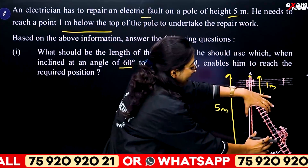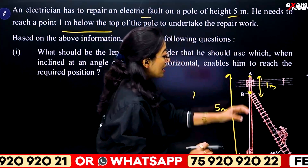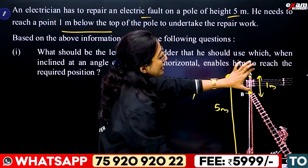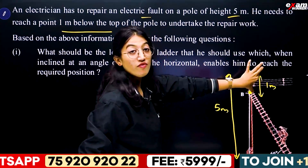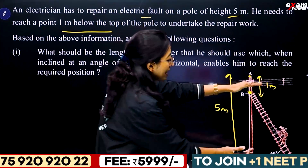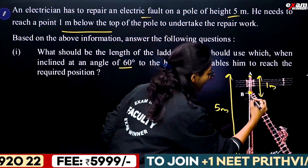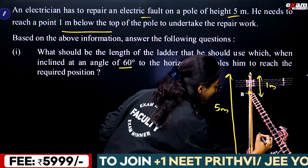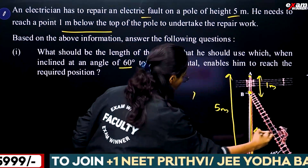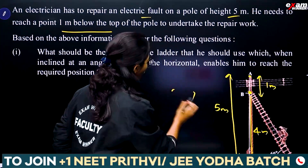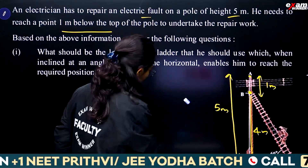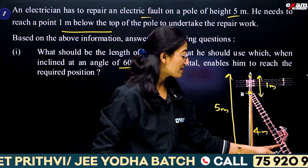We consider a triangle for this problem. The full length of the pole is 5 meters. The point of repair is 1 meter below the top, so it is at 4 meters. The angle at the base of the triangle is 60 degrees.